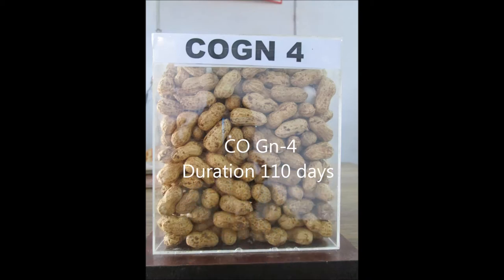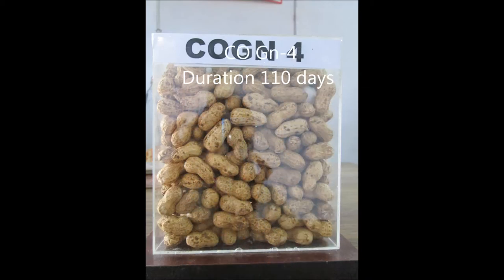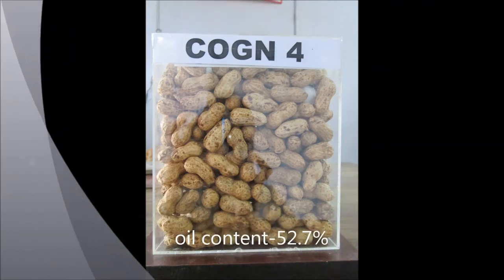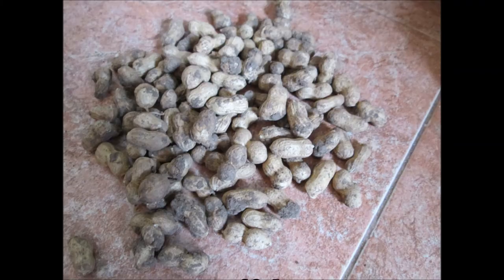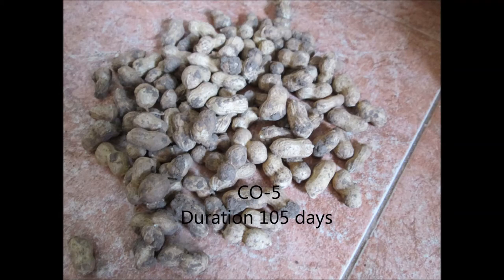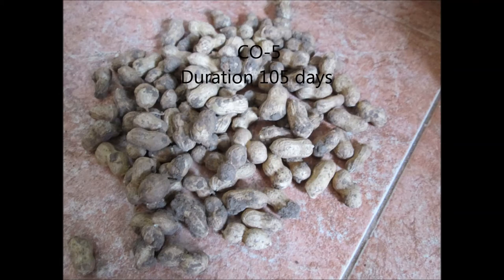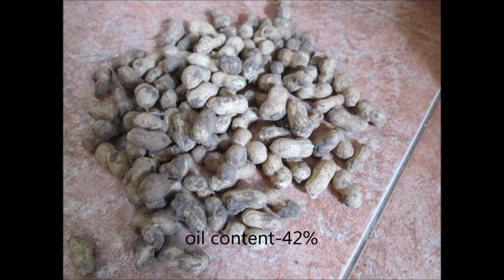COE GN4 is a derivative from TNV10 x ICGS82. Its duration is 110 days. It is both a rain fed and irrigation crop. Its seeds are bold with a high oil content of about 52.7%. COE 5 is a high yielding variety. It has a duration of about 105 days. Its oil content is 42 percentage.